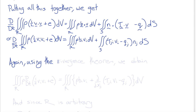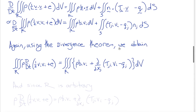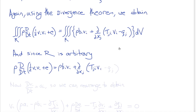Using the divergence theorem to convert the surface integral into a volume integral, and since the region R is arbitrary, the integrand itself must be satisfied. Therefore: rho times the material derivative of one-half Vi Vi plus e equals rho Bi Vi plus del/del xj of (Tji Vi minus qj).